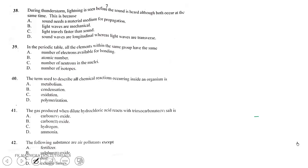Question 38. During thunderstorm, lightning is seen before the sound is heard although both occur at the same time. This is because light travels faster than sound. Option C is correct. Question 39. In the periodic table, all the elements within the same group have the same number of electrons available for bonding. That's why they are in the same group. Option A is correct. Question 40. The term used to describe all chemical reactions occurring inside an organism is metabolism.